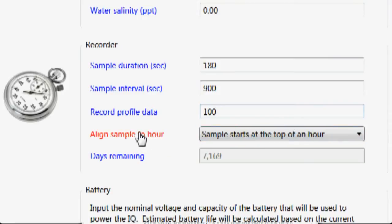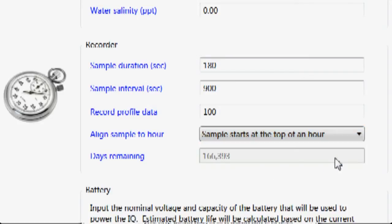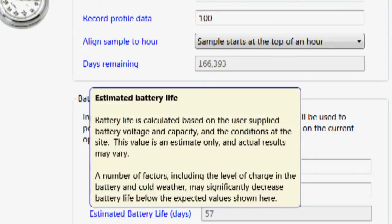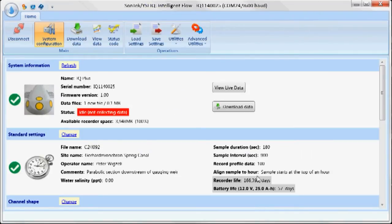The align to sample hour. We have three choices. First of all, do not align. We can set the sample to start at the top of the hour or at the end of the hour. In this case, I'll set it to start at the top of the hour. It gives me the days remaining. The battery power is next. This basically gives you an estimate of our power consumption. Here we're using a 12 volt battery. We've got a 20 amp hour battery, and it basically is telling me I have about 46 days left of the recorder. So once I've entered all that information, it sends that to the IQ and it's programmed.